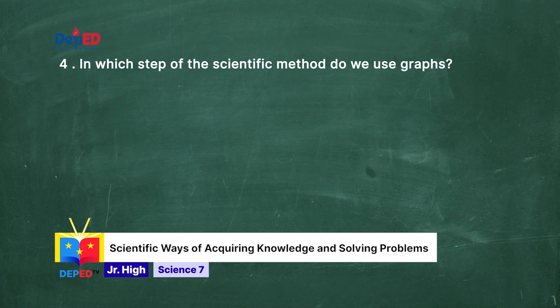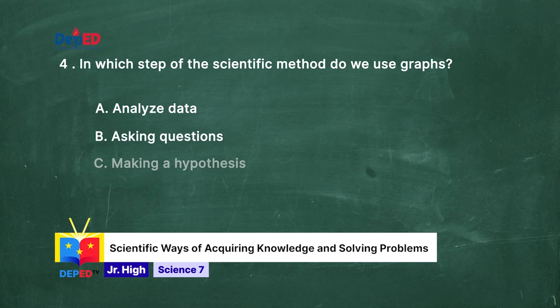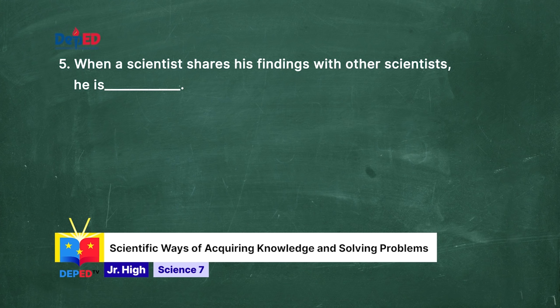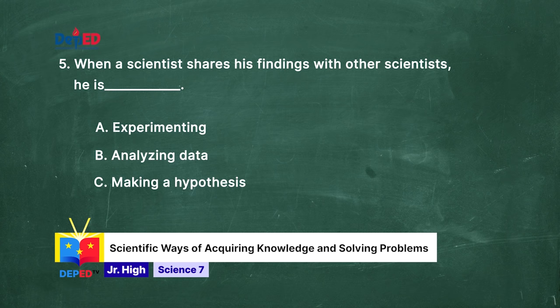Number 4. In which step of the scientific method do we use graphs? A. Analyze data. B. Asking questions. C. Making a hypothesis. D. Communicate results. Number 5. When a scientist shares his findings with other scientists, he is blank. A. Experimenting. B. Analyzing data. C. Making a hypothesis. D. Communicating results.